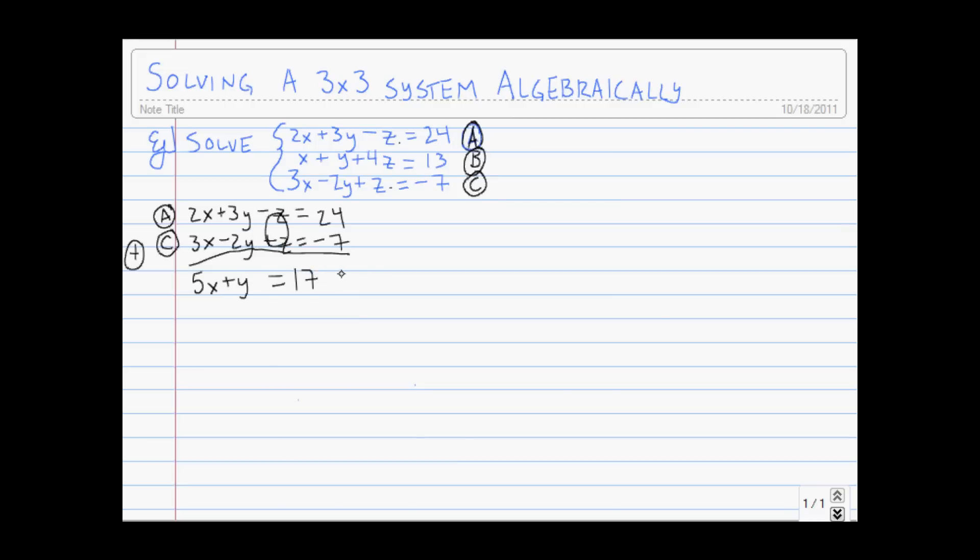When we add them together, we get 5x plus y equals 17. And so, there's our first two-variable equation. And so, I'm going to give that a name, too. Again, all about giving things names. I'll call that equation d, and I'll put it in a little box instead of the circles I've got up there. So, there's one 2x2, or two-variable equation. It's half our 2x2 system that we want.